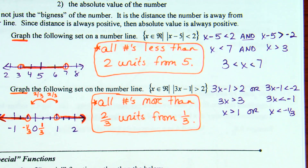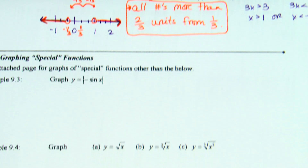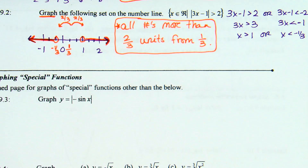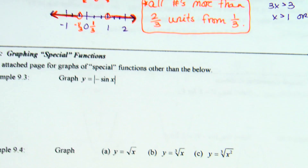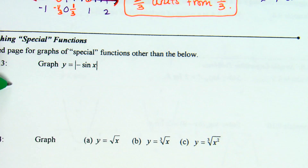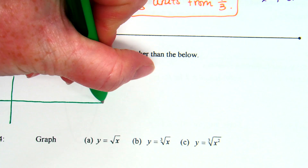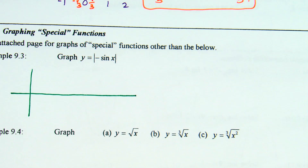Should we graph some special functions? I'm not going to grab the calculator to graph these. What do we know about how to graph these without the calculator? First example: graph y equals absolute value of negative sine x. Do we remember how to graph sine? I'm going to do two graphs — a getting-started graph and then a final graph. What's the period of sine? Two pi. The range of sine has an amplitude of one, going from negative one to one.